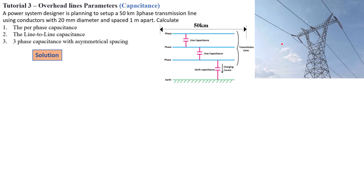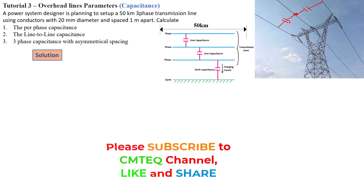Before we start solving this problem, let's look at where these capacitances come from. We have phase one, phase two, and phase three, with capacitances between them, and also a capacitance between the ground and the phase — though that one is rather small due to the height at which the conductors are situated. So we're going to have a capacitor between the lines and between the line and the phase.